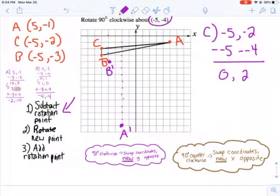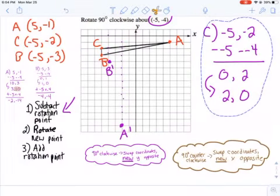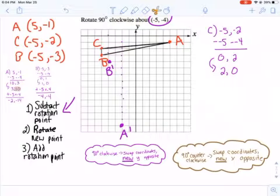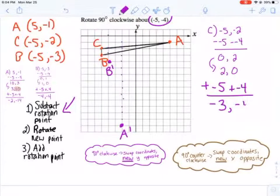All right. So now I do my rotation, flip my coordinates. Again, I have 0 as my Y. So that's kind of cool because I can't really make it an opposite. So now I add that rotation point back in. Plus negative 5, plus negative 4. And I get negative 3, negative 4. So now I can go down here. 1, 2, 3. Down 1, 2, 3, 4. I call that C prime.